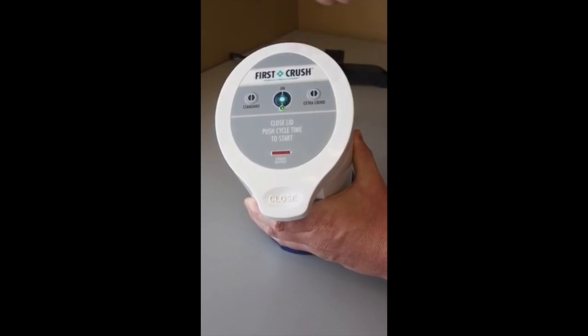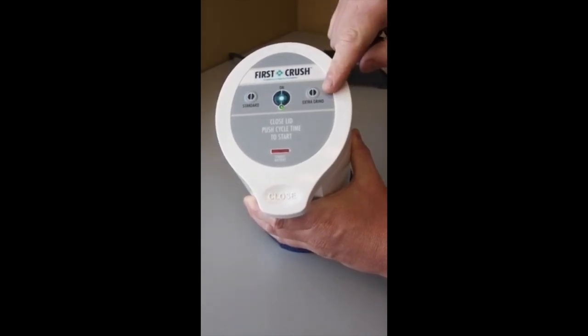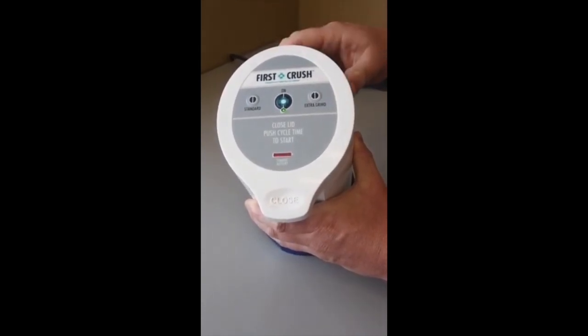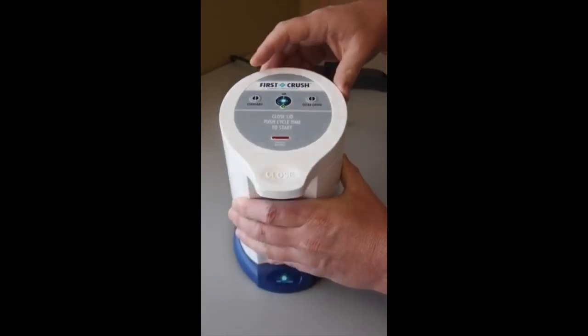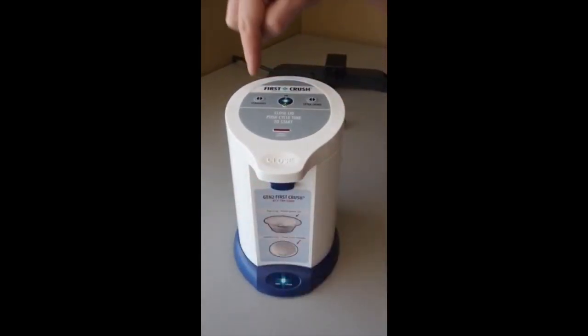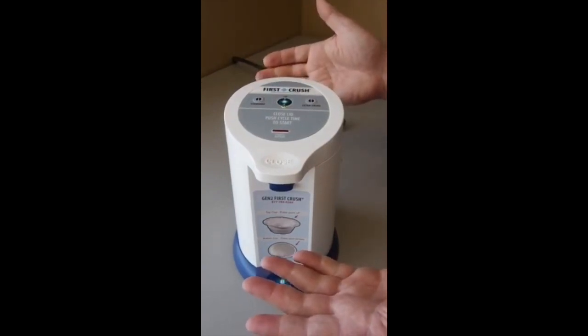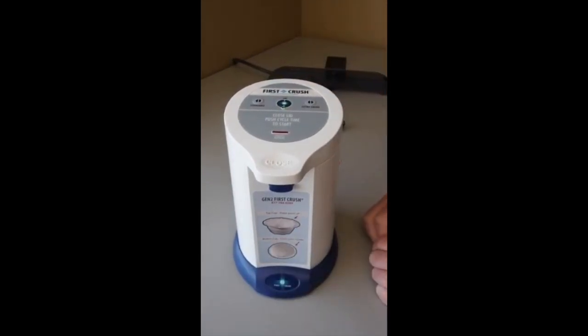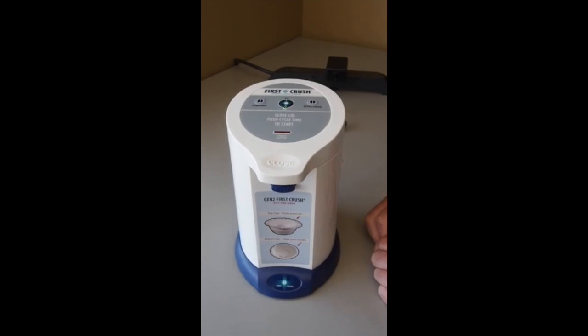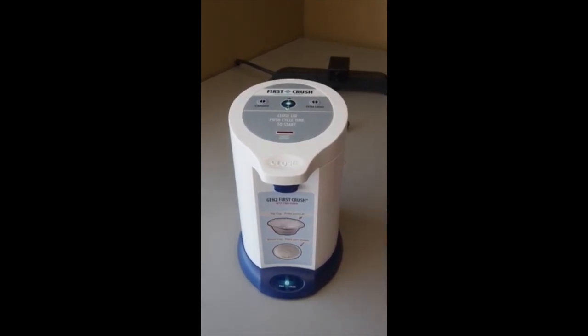There's two grind settings as shown here, a standard on the left and an extra grind on the right. The only difference is time. The standard crush is seven seconds, the extra grind is 14. The key is that once you push it, your hands are free, so you can accomplish other tasks at the med cart while the machine is crushing the medication and you no longer have to waste time or hurt your elbow, wrist or shoulder during the crushing cycle.